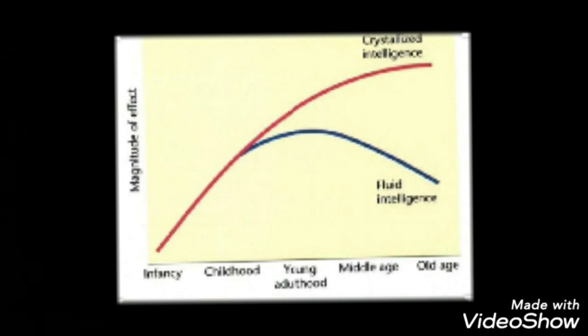And after 15 or 16 years, the curves diverge. The curve for crystallized intelligence remains virtually unchanged or rises a little bit, but the fluid intelligence curve shows decline.